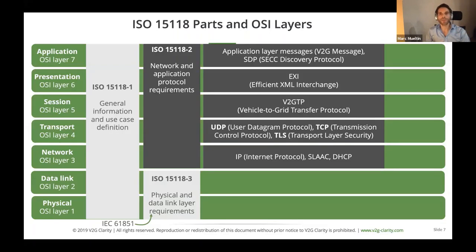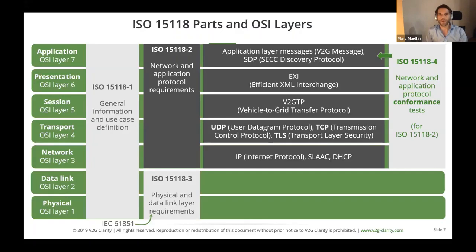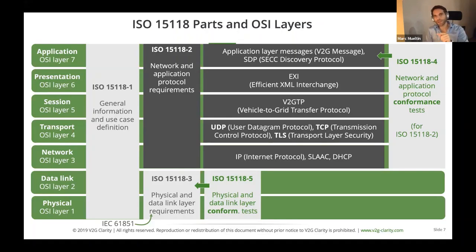There's also a dash-3 document covering the very lowest levels — physical and data link layer — with a tight relation to IEC 61851. Conformance tests in dash-4 ensure vendors implementing these protocols can verify interoperability and conformance with the standard specification, with a large set of positive and negative test cases. Dash-5 covers conformance tests for dash-3 use cases.